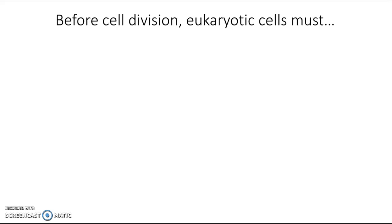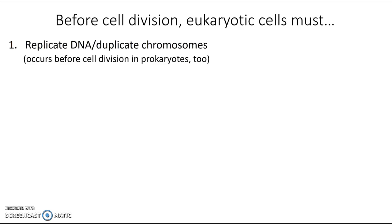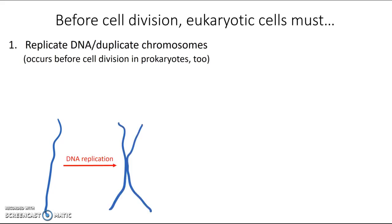One of the first things they have to do is replicate their DNA — duplicate their chromosomes. This occurs in prokaryotes before cell division too, but it looks a little different in eukaryotic cells. If we start with one linear eukaryotic chromosome, after it goes through DNA replication, we'll end up with a chromosome that looks like this. These two sides are known as sister chromatids. That's what the chromosome looks like after DNA replication in a eukaryotic cell.